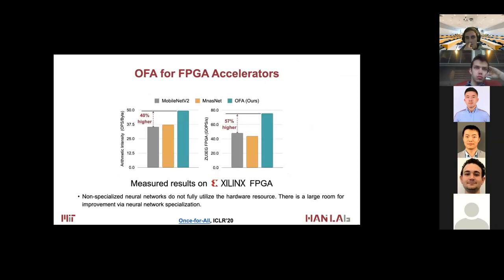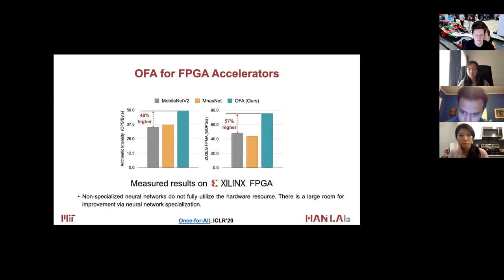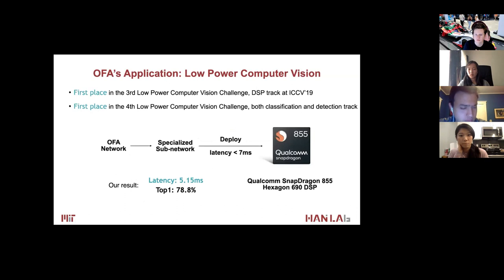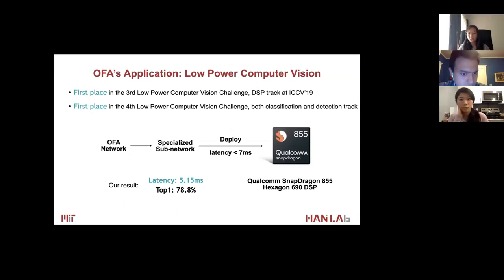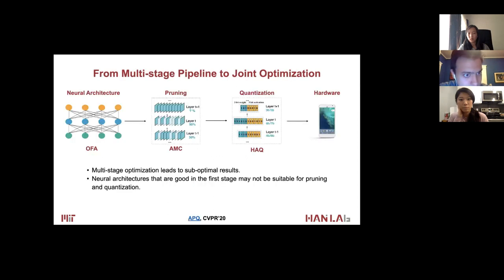Once-for-All not only works on general-purpose hardware, but also on specialized deep learning accelerators. On FPGA, it improves resource utilization intensity by 40% and jobs per second by 57% compared to MobileNetV2, showing that using non-specialized neural networks does not fully utilize hardware resources and there is still large room for improvement through designing specialized neural networks for the target hardware. We applied the Once-for-All network in low power computer vision challenges and won first place in the third and fourth challenges.